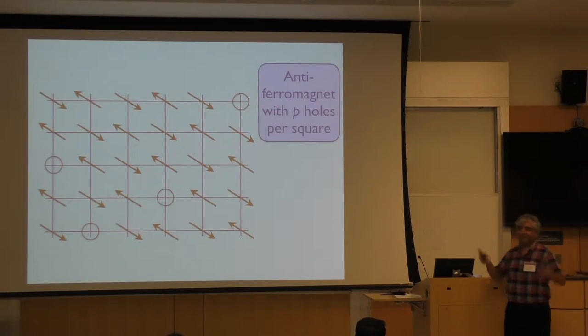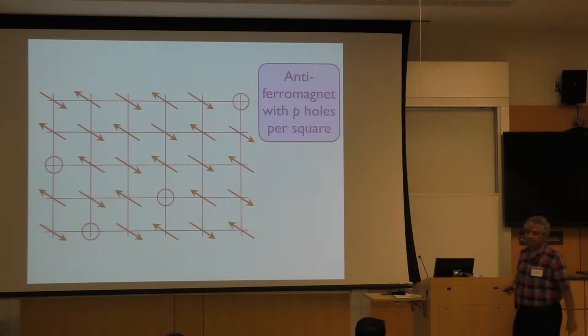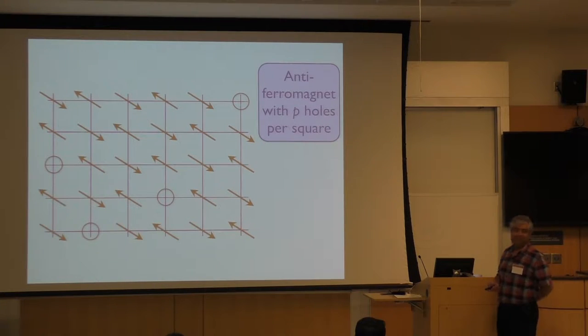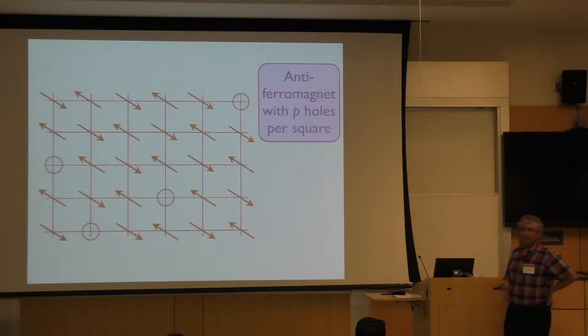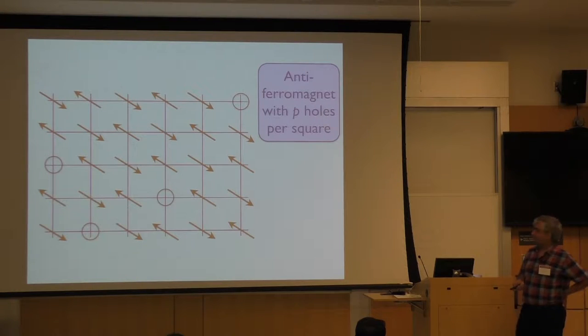Whereas the state I described had volume of Fermi surface P, not 1 plus P. So that's why it had all this exotic structure associated with it. That was the main message of everything I wanted to say last time.